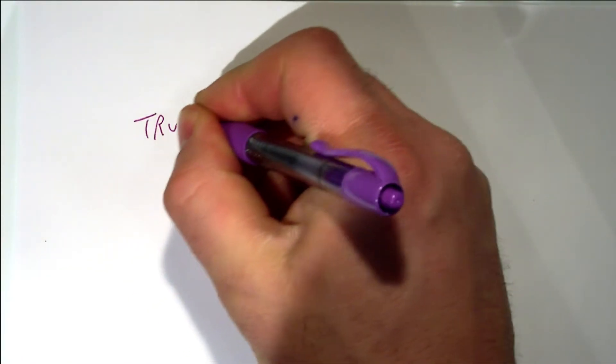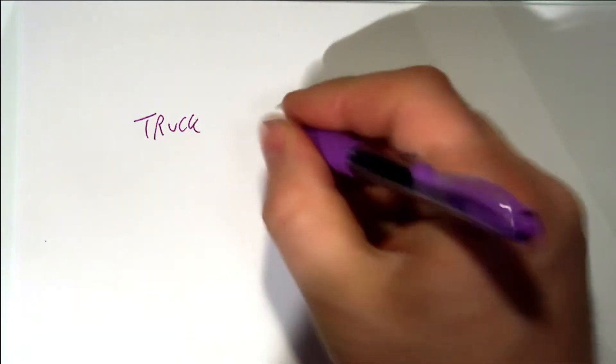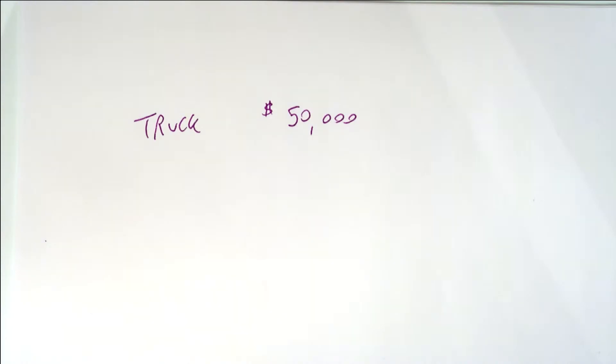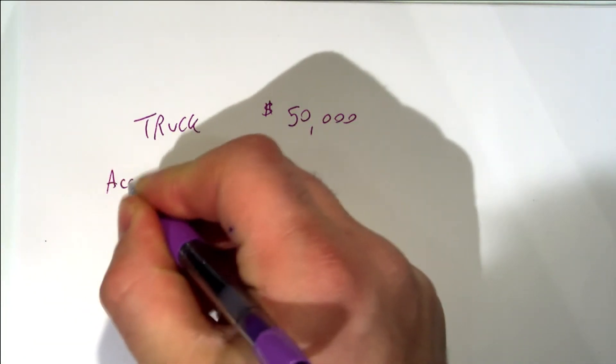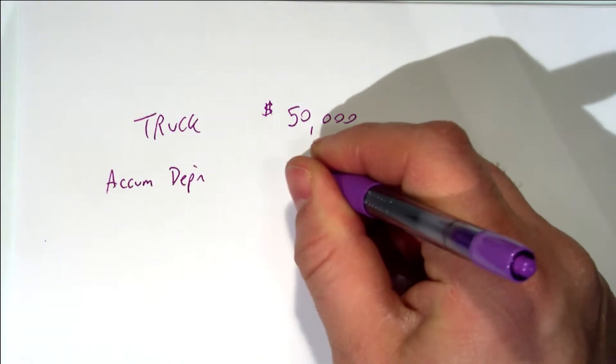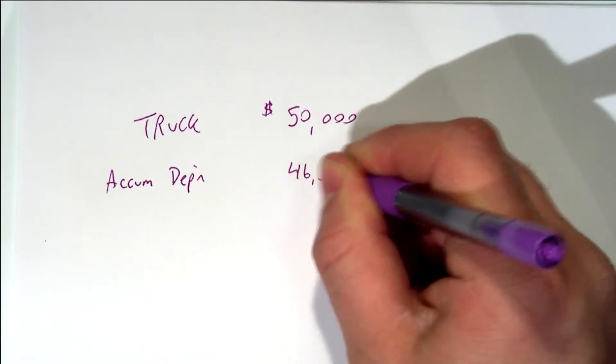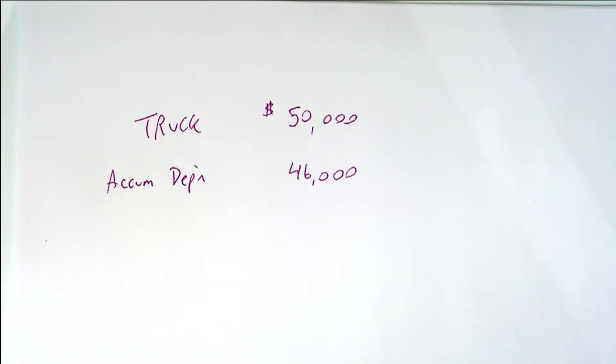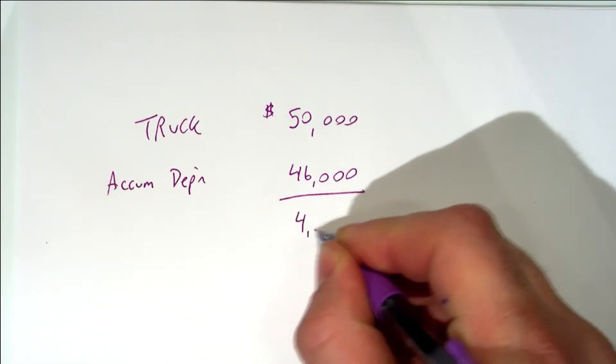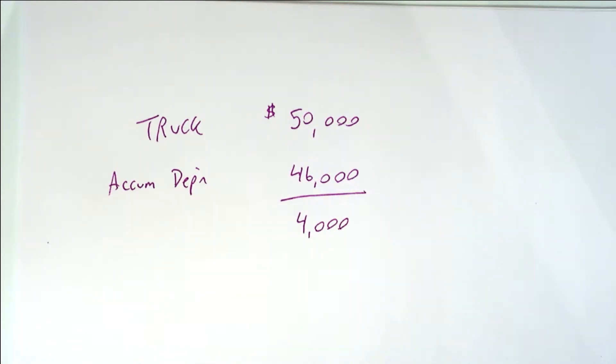Let's say that we have a truck and let's say the cost of that truck was fifty thousand dollars. Well let's say the accumulated depreciation on that truck is forty six thousand dollars. And let's say we thought there would be a four thousand salvage value so we depreciated down to the salvage value. So that equals four thousand. Do you remember what that equals? What that term is?